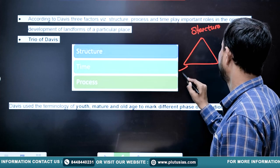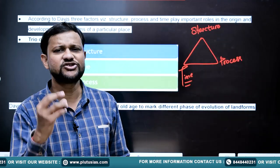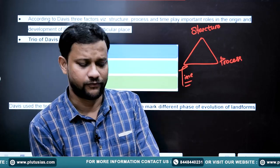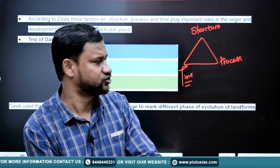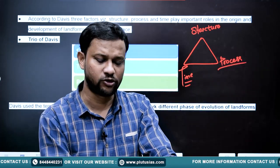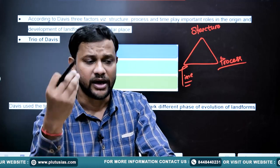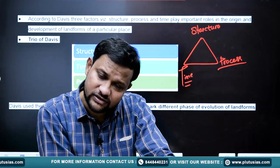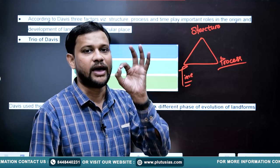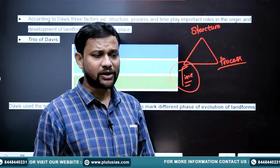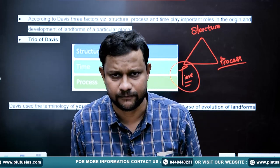Structure refers to the geological rock structure — joints, faults, folds, types of rock, and so on. Process refers to what kind of process the landform is exposed to: endogenic, exogenic, diastrophic, orogenic, epeirogenic, tensional, compressional, weathering, and all those. The kind of process a landform is subjected to defines its overall nature and intensity of transformation.